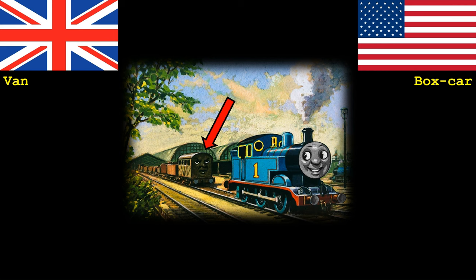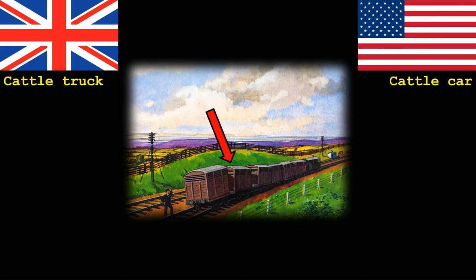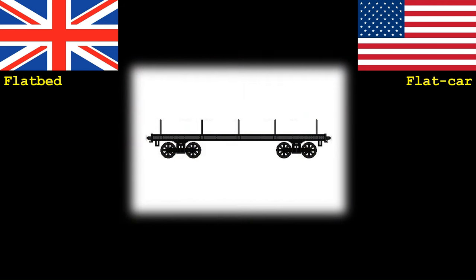Vans or boxcars are not only used for transporting cargo. There are specially modified variants used for transporting livestock such as cows, sheep and pigs. These are known as either a cattle truck in the UK or cattle car in the US. Longer items can also be transported by rail and for this they are usually placed on what is known in the UK as a flatbed, or in the US you may refer to this as a flat car.